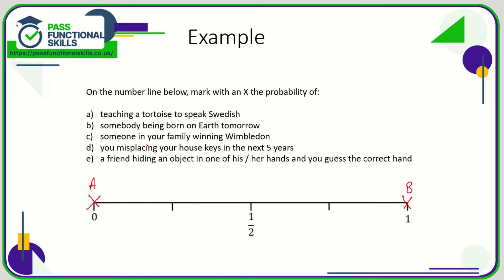What's the probability of someone in your family winning Wimbledon? Well, I don't know what your family are like as far as tennis is concerned, but I'd say it's extremely unlikely. Not impossible, but I would mark that as a probability somewhere, not the other end, which would be close to impossible.